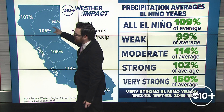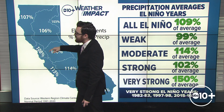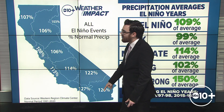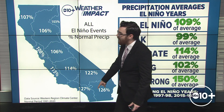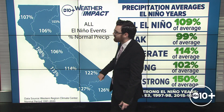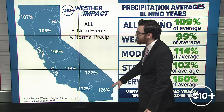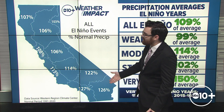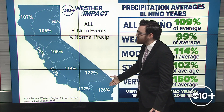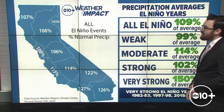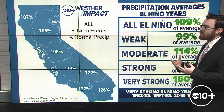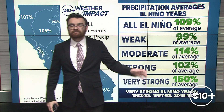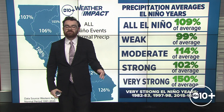In the Sacramento Valley, we're seeing about 106% of average precipitation, 108% out in the Bay Area, and down in Southern California during an El Niño, 127% of average along the Southern California coast. Even into the desert southwest and southeast of California, we see 122% and 126% of average precipitation during all El Niño events. Statewide, that equates to about 109% of average. But these come in different flavors as well.